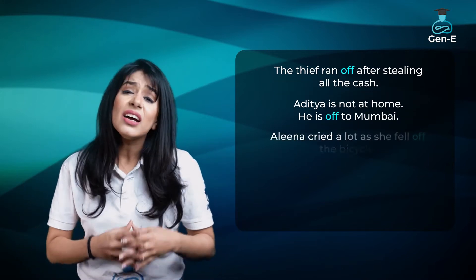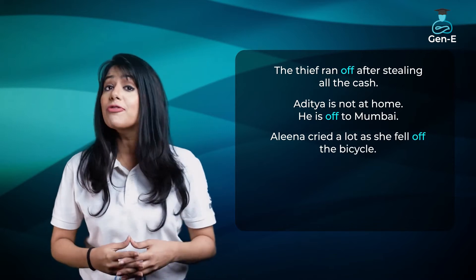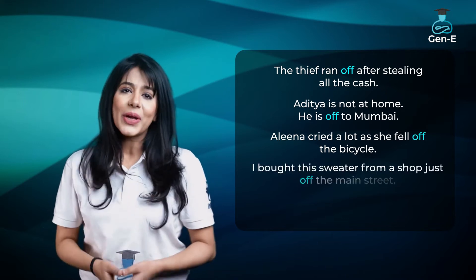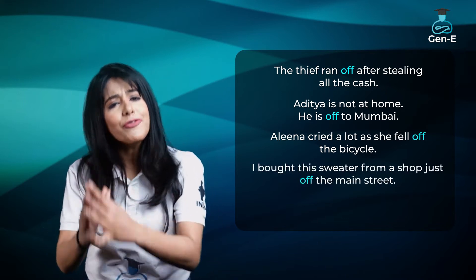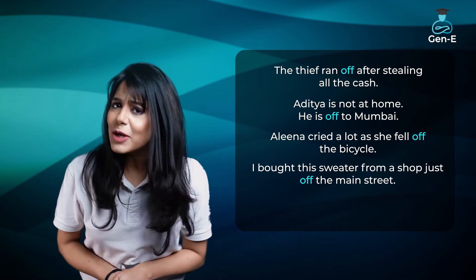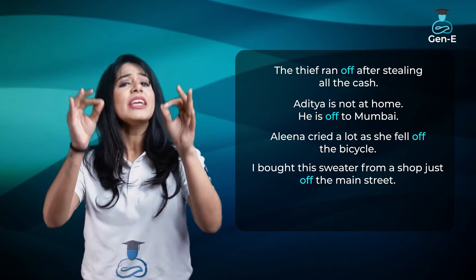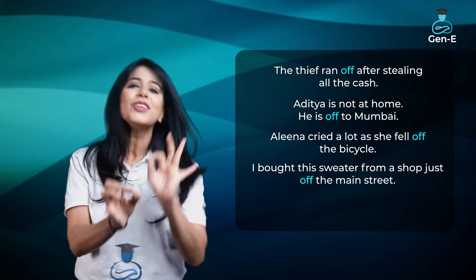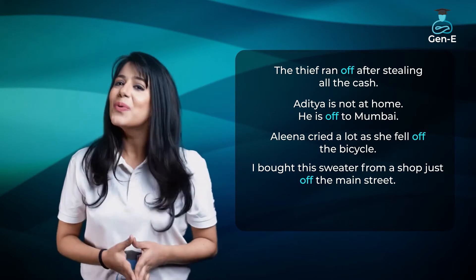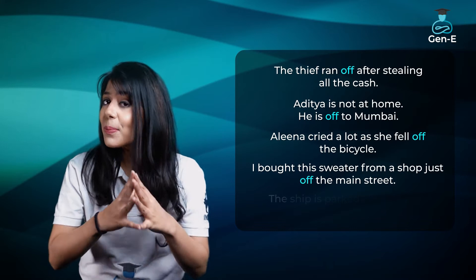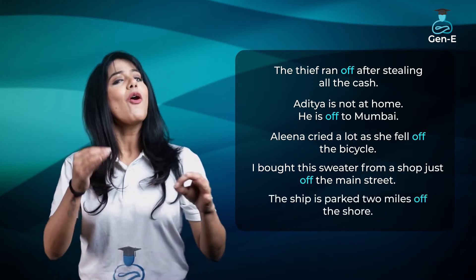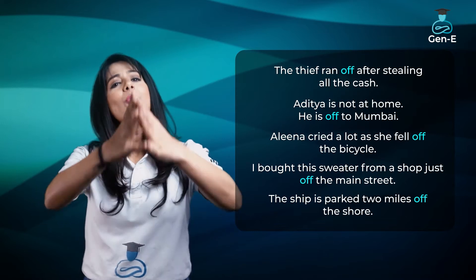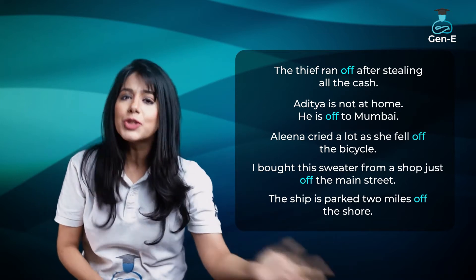Ya, 'Alina cried a lot as she fell off the bicycle.' Ek aur sentence dekho: 'I bought this sweater from a shop just off the main street' — iska meaning hua, maine ye sweater ek aisi shop se khareeda hai jo main street se thodi si door hai. 'The ship is parked two miles off the shore' — iska matlab hai ship ko do miles door park kiya gaya hai shore se.